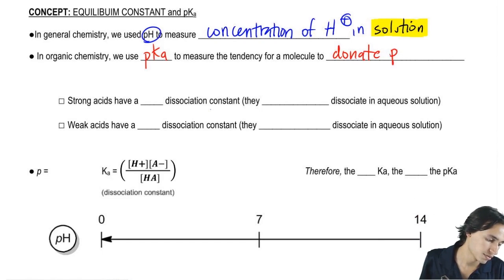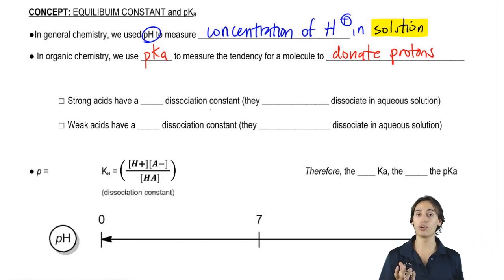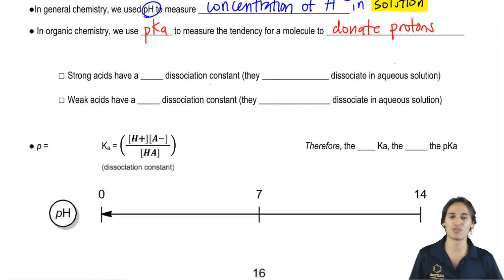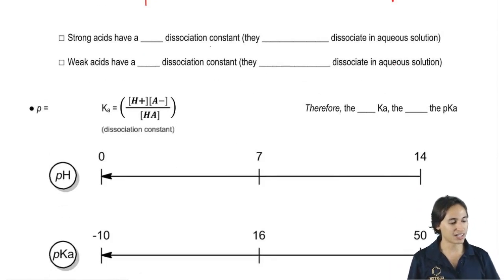And that's what we actually care about. So that's why in GenChem you use pH, but now in Orgo we're going to use pKa instead.